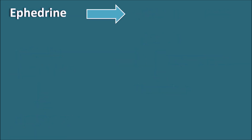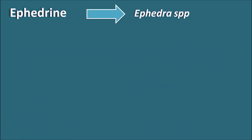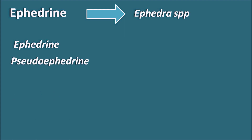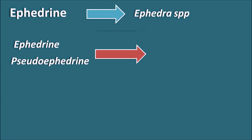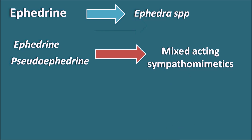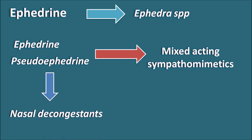Next is ephedrine, coming from Ephedra species such as Ephedra sinica and Ephedra officinalis. Two drugs are obtained from this plant: ephedrine and pseudoephedrine. These act as mixed-acting sympathomimetics — they can release noradrenaline from storage vesicles as well as directly activate adrenergic receptors. They produce cardiac stimulation and bronchodilation, but due to their side effect profile, they are mainly used as nasal decongestants.